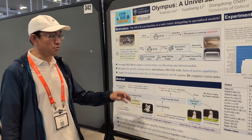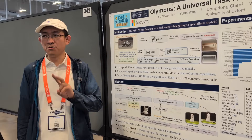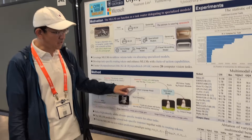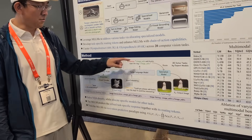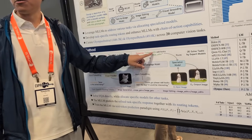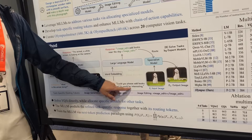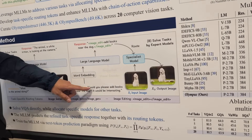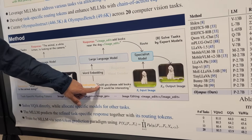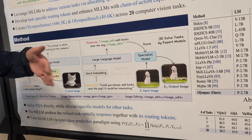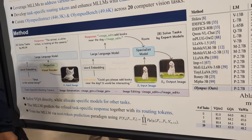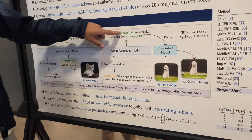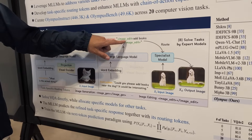In order to achieve this goal, we did two different designs. The first one is to generate a predefined special token according to the user's request. If the model finds the user wants to use some image editing models, it will generate some special tokens for image editing.